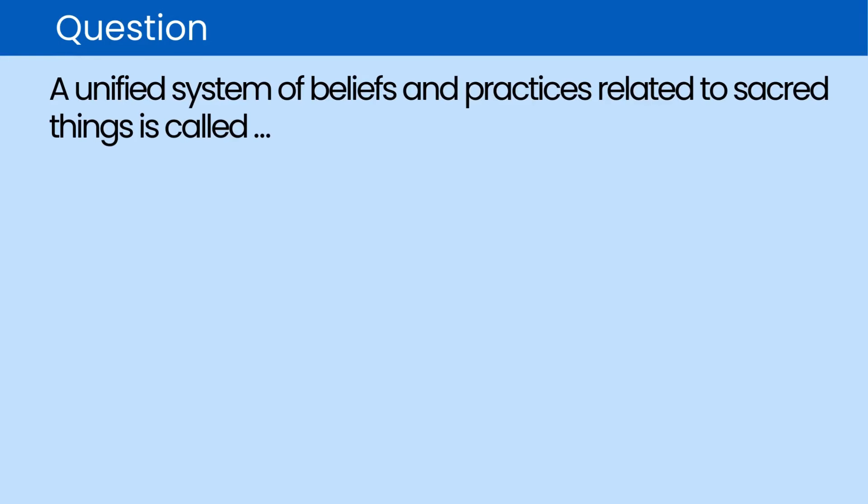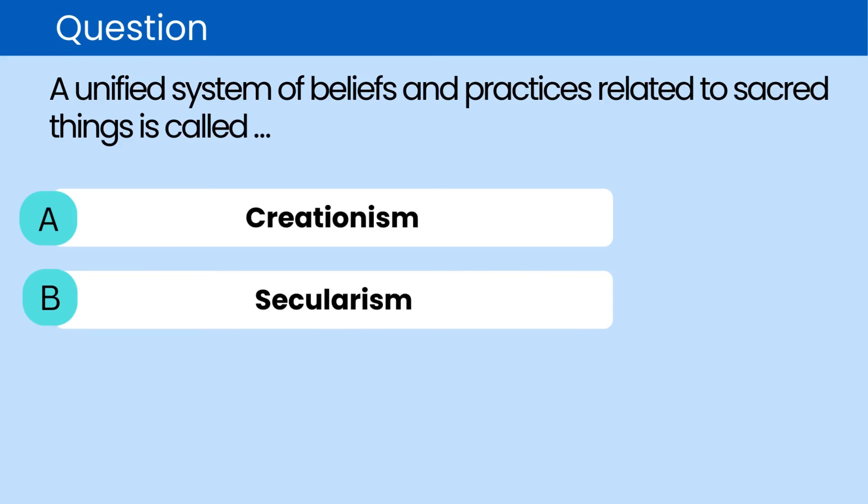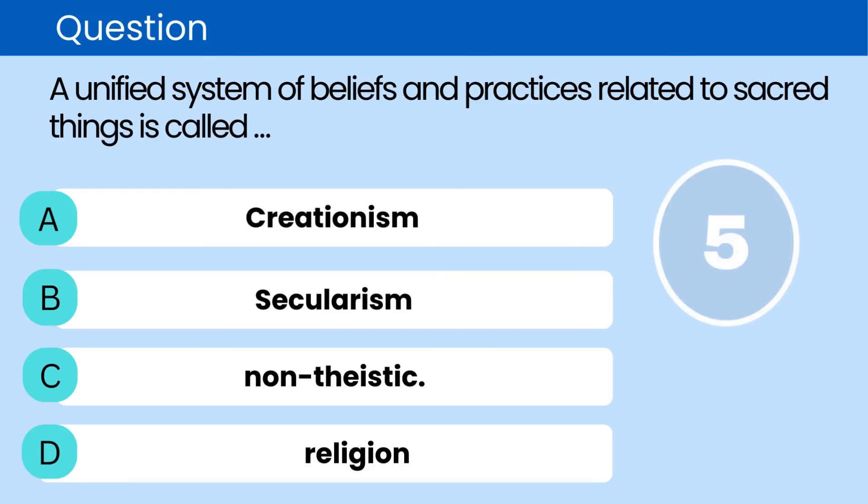Question: A unified system of beliefs and practices related to sacred things is called. A. Creationism. B. Secularism. C. Non-theistic. D. Religion. The correct answer is D. Religion.